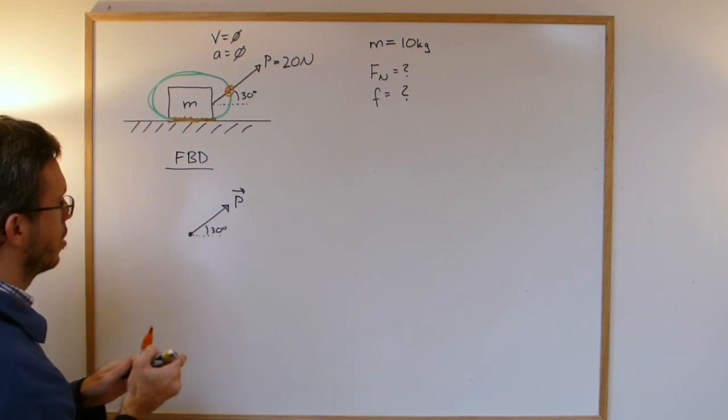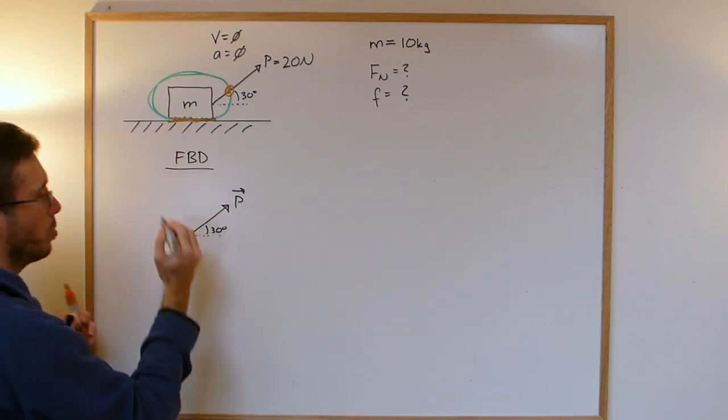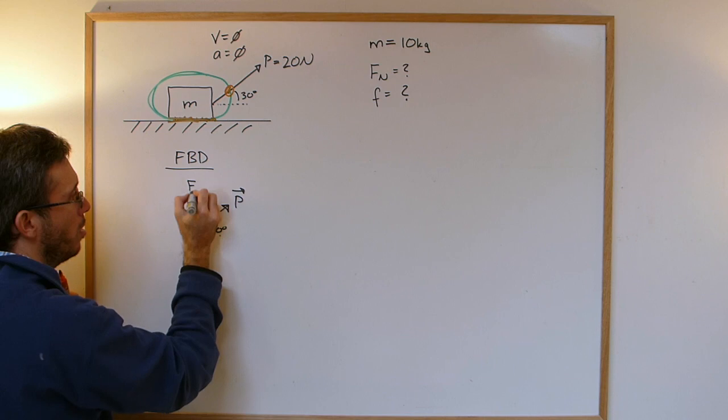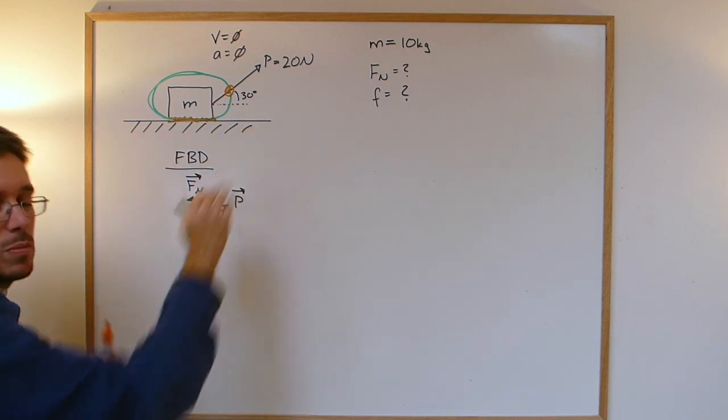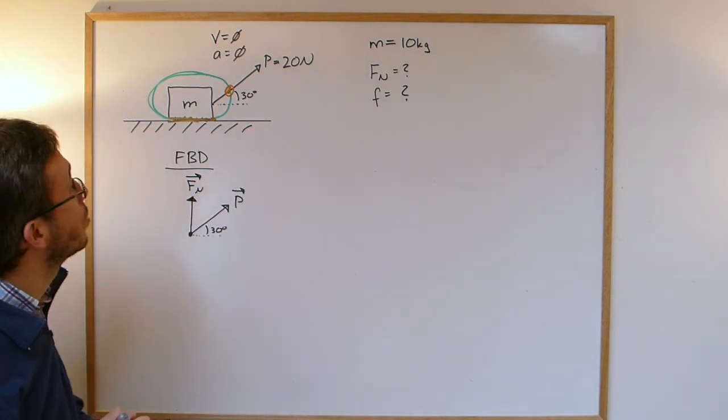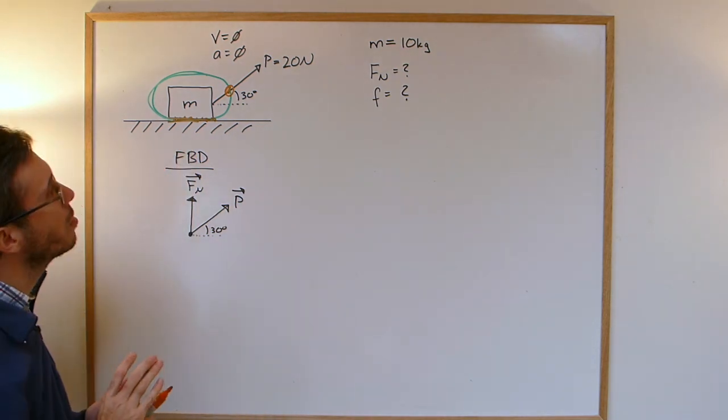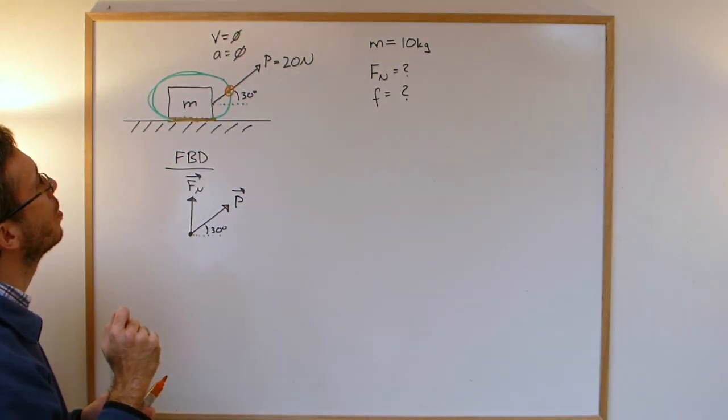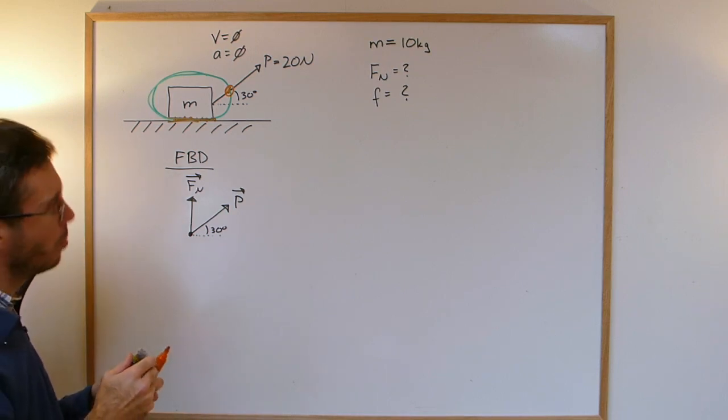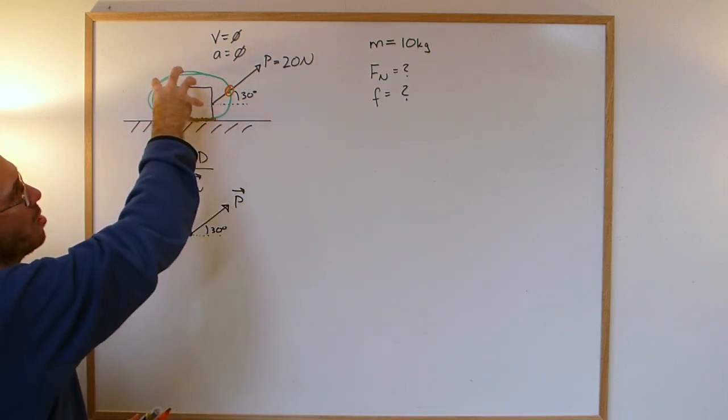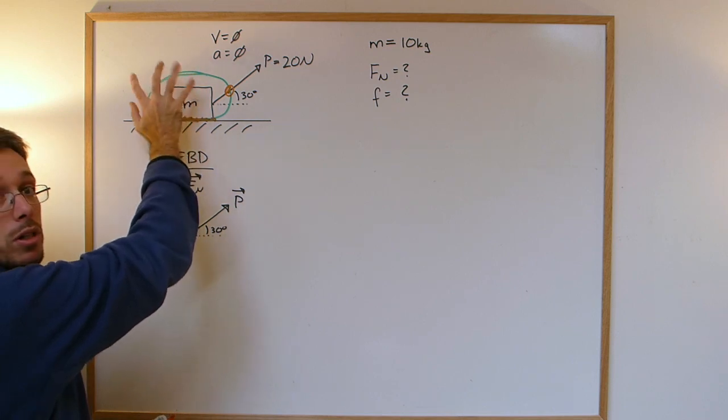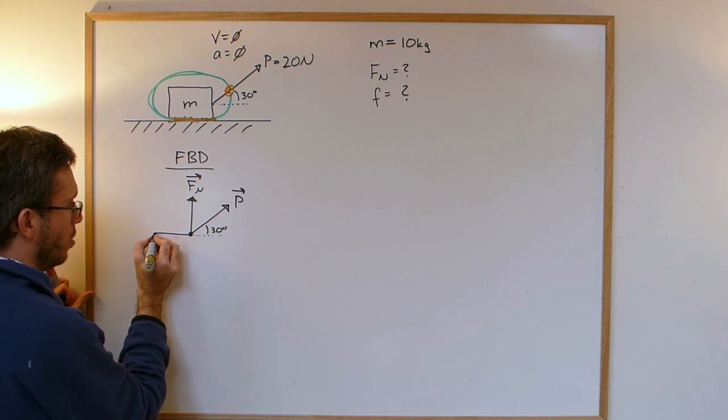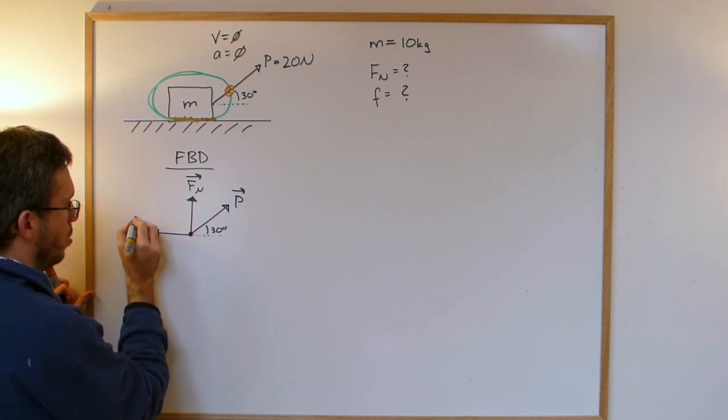Whenever I have a surface, I will get a normal force which points away from the surface and I will get a friction which is perpendicular to the surface. Now which way does the friction go? The friction is always trying to oppose the sliding. The sliding, not the motion, please memorize that. The friction is opposing the sliding. Here the possible sliding will be, if there would be no friction, the box would move to the right. Therefore the friction moves to the left. This is my friction.